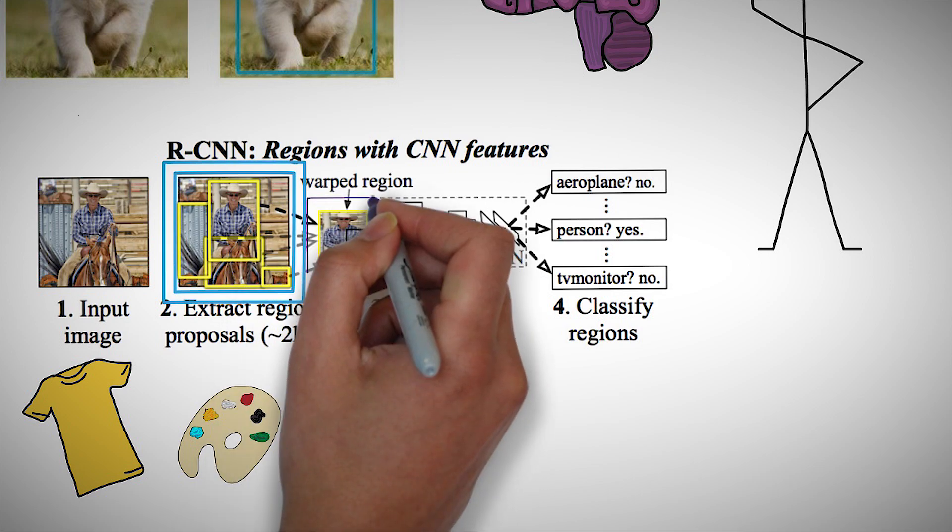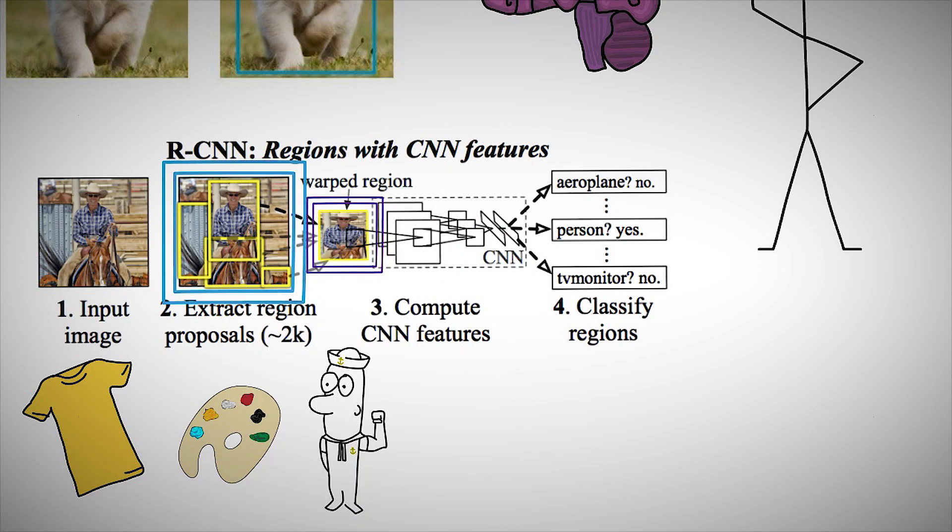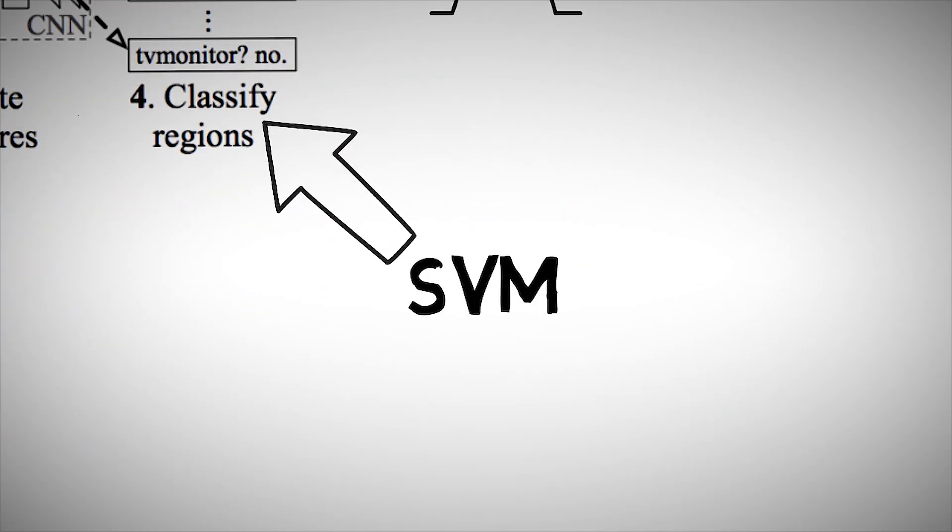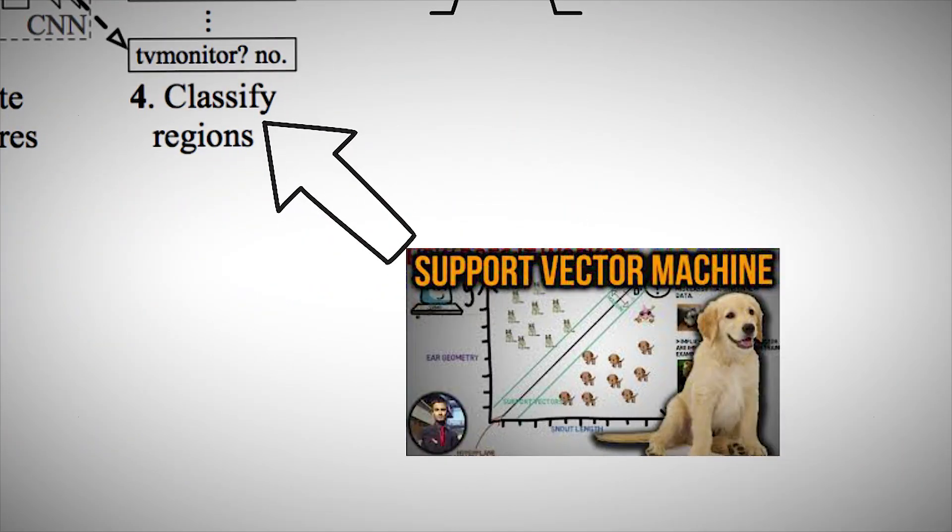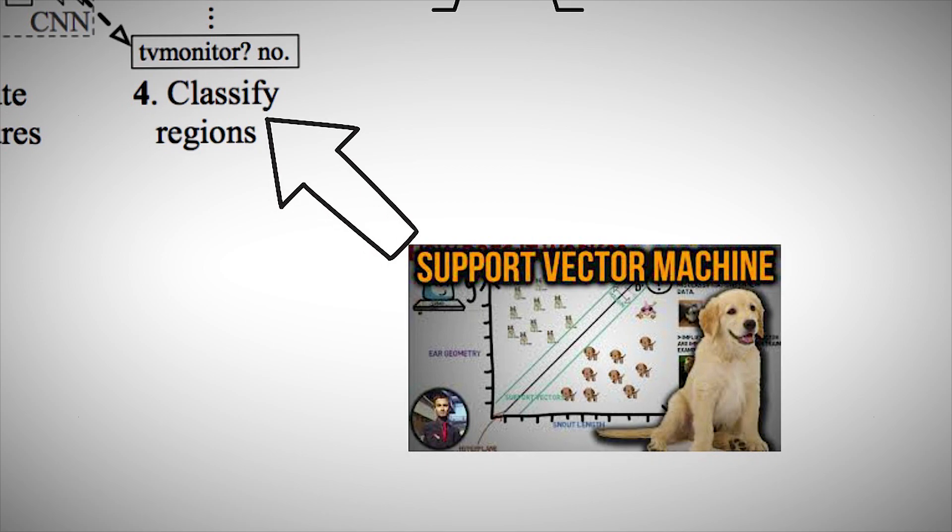Once the proposals are created, R-CNN warps the region to a standard square size and passes it through to a modified version of AlexNet, which at the time was the winning submission to ImageNet 2012 that inspired R-CNN. On the final layer, step 4 of the CNN, R-CNN adds a support vector machine or SVM that simply classifies whether this is an object and if so, what object. Check out my lecture on support vector machines in the link attached to this video to learn more.